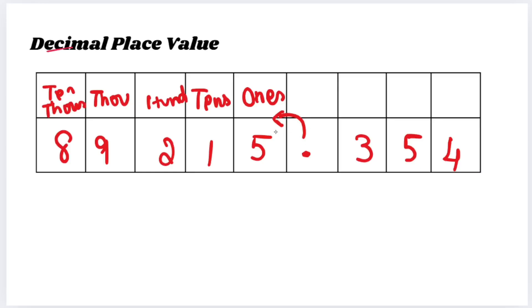Towards the left of the decimal, starting will be the ones. Then tens, 100, 1000, 10,000. This is the usual place value. We know what the basic place value is — that basic place value goes towards the left of the decimal. First will be the ones, then tens, 100, 1000, 10,000.